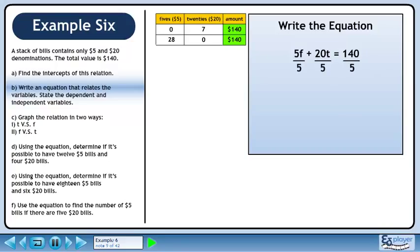We can reduce this equation by dividing both sides by 5. The equation we're looking for is f plus 4t equals 28.